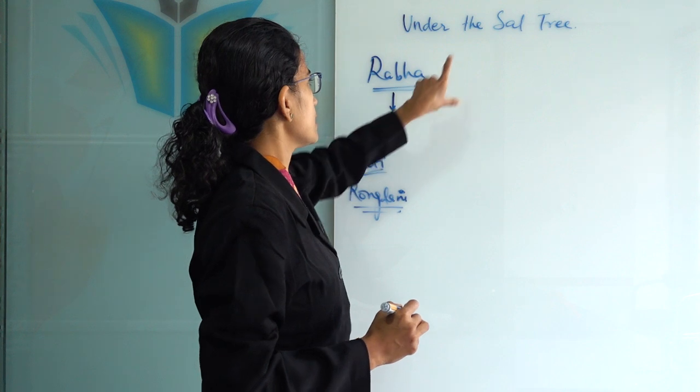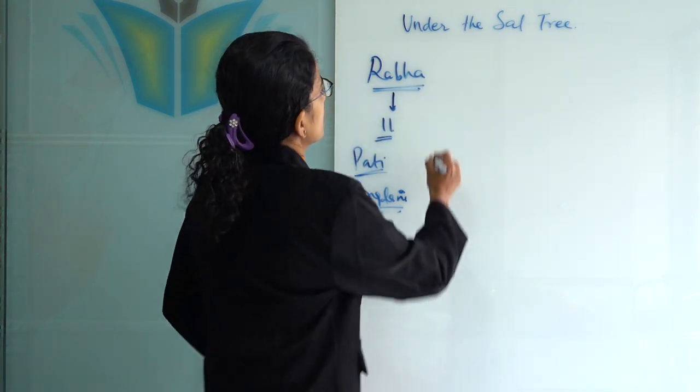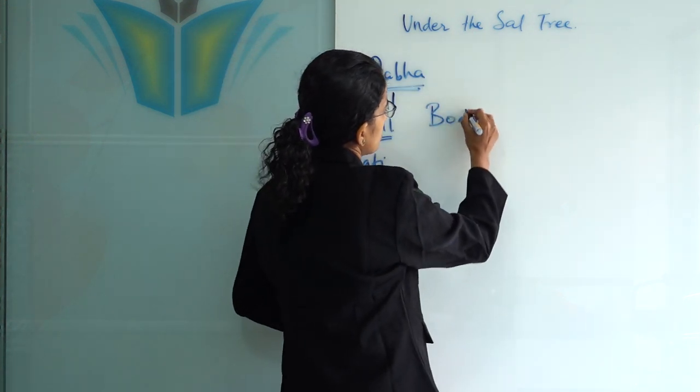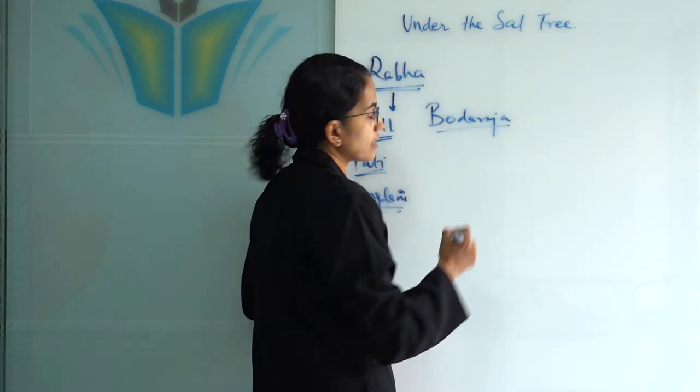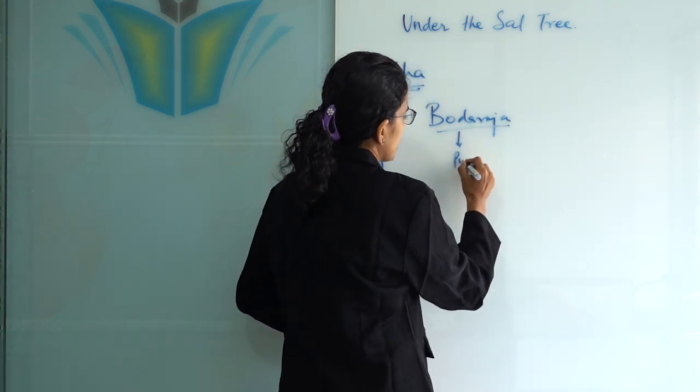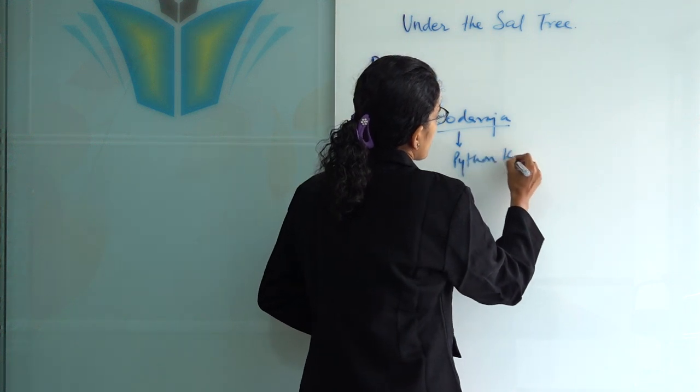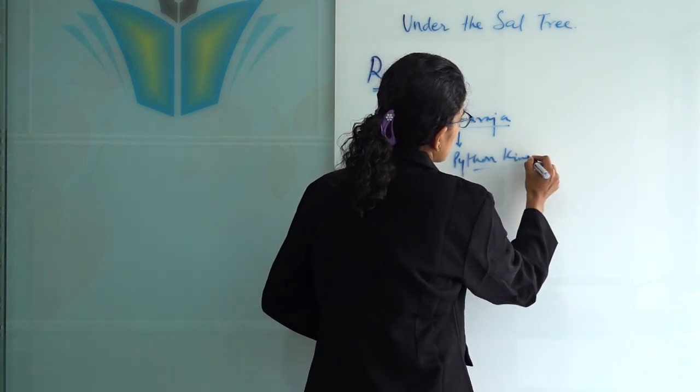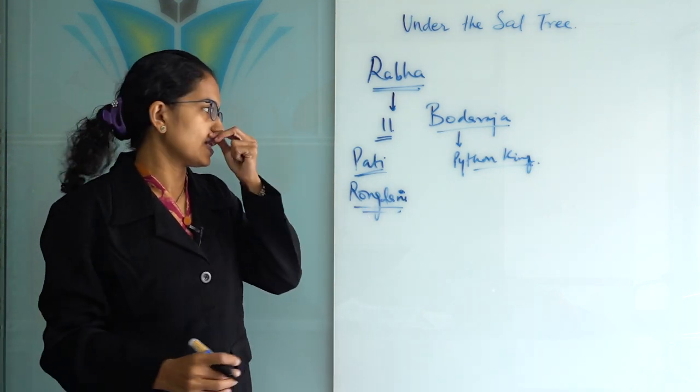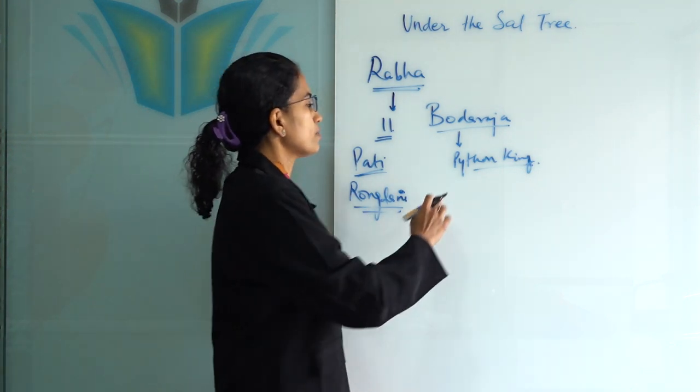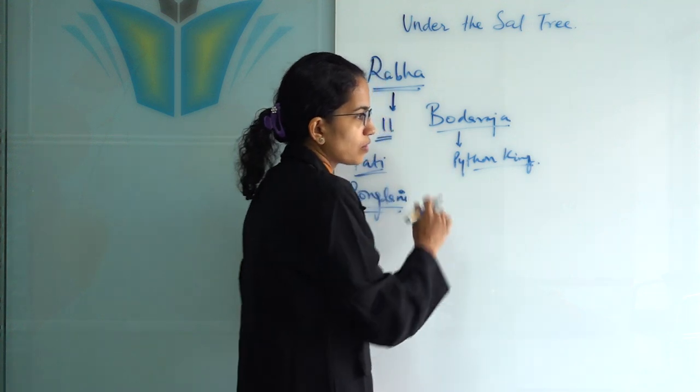Recently, under the Salt Tree Festival, the script was Boda Raj, which in the Rabha dialect means the Python King. The concept is that human beings' needs and greed are expanding like the size of a python, growing and growing, and the play was based on that.